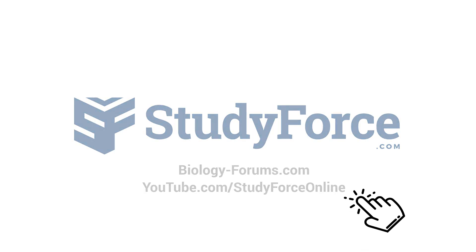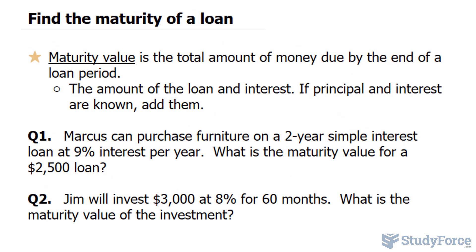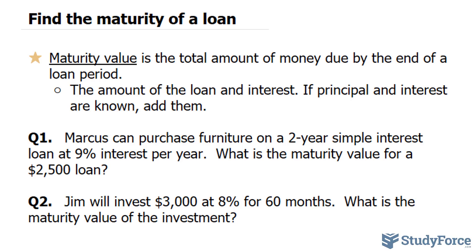In this quick lesson, I'll show you how to find the maturity of a loan. The maturity value is the total amount of money due by the end of a loan period. Now, of course, if someone were to loan you money, they're expecting perhaps some interest in return. So the maturity value is how much they loaned you plus the interest earned by the end of that period.